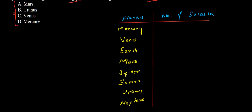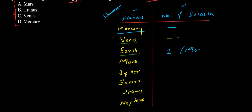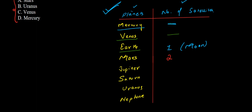So for Mercury, we know that Mercury has no satellites — that is zero. This is a very important table with the planets and the number of satellites; you need to remember it. For Venus also we have no natural satellites — zero. For Earth, we have one satellite and that is the Moon. And Mars has two satellites.